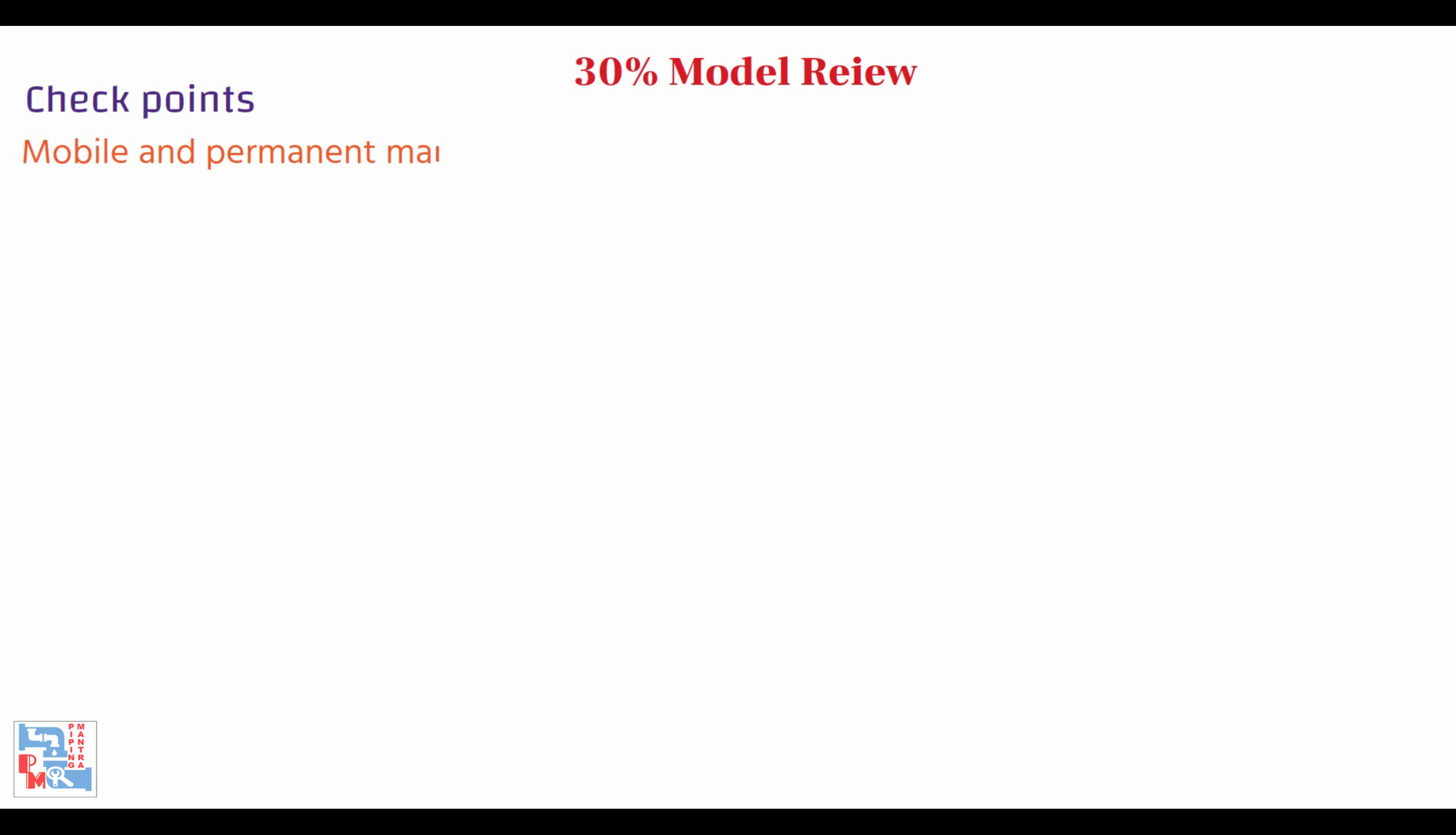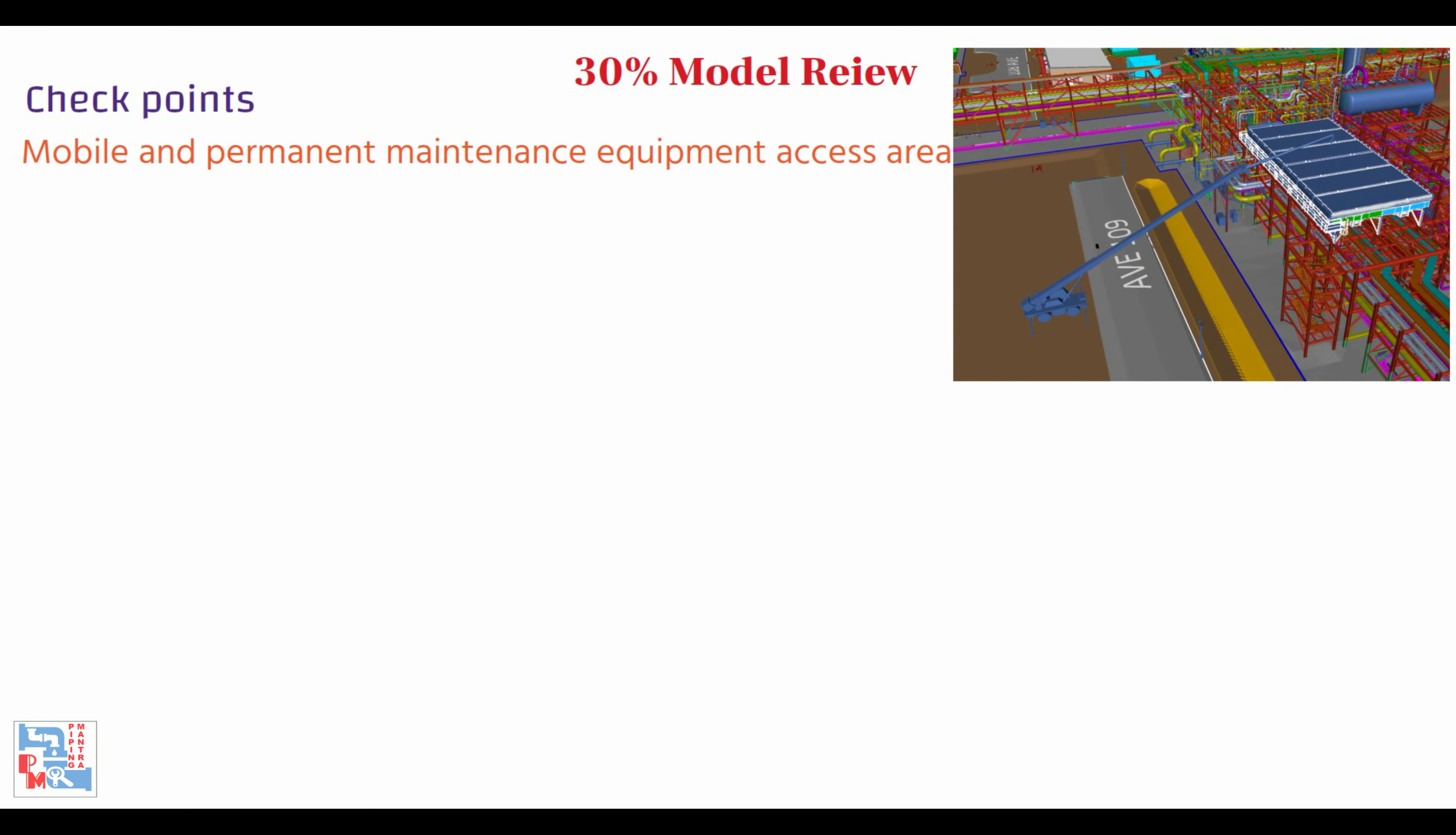Mobile and permanent maintenance equipment access area is modeled and checked. Space for construction and erection access is shown as translucent boxes based on the constructability study. Concrete slabs and paving are modeled and checked. Hard standing areas are defined and properly located and checked.